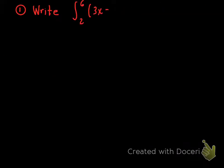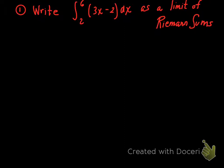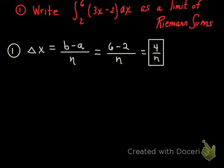Alright. So again, here's the challenge in front of us. Step 1. I've got to find delta x. That's b minus a over n. That appears to be 6 minus 2 over n. I'm getting that from the limits of integration. 6 minus 2 over n, which is 4 over n. You're going to use that. That's step 1.